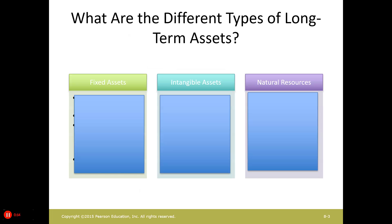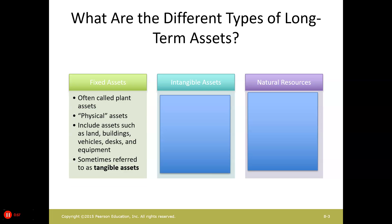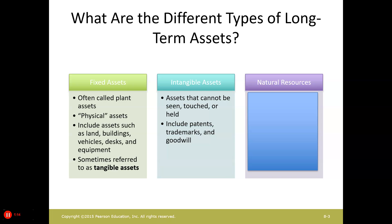First we have fixed assets. These are also tangible assets. They include assets such as land, building, vehicle, desk, and equipment. Remember right from the beginning: we never allocate the cost of land. These are also sometimes referred to as tangible assets.